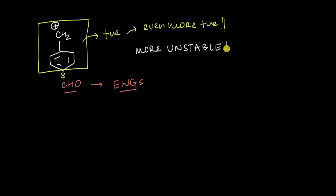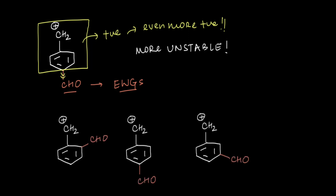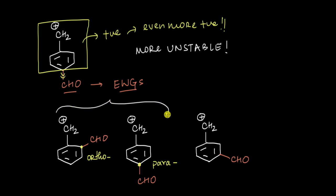So adding an electron withdrawing group to a benzyl cation will definitely make it more unstable. However, it turns out that the amount of instability added actually depends upon the position at which we add the electron withdrawing group. Adding electron withdrawing groups at the ortho and para positions makes the cation much more unstable compared to adding it at the meta position. Adding an EWG at meta makes the benzyl cation more unstable, but not as unstable as at ortho or para.